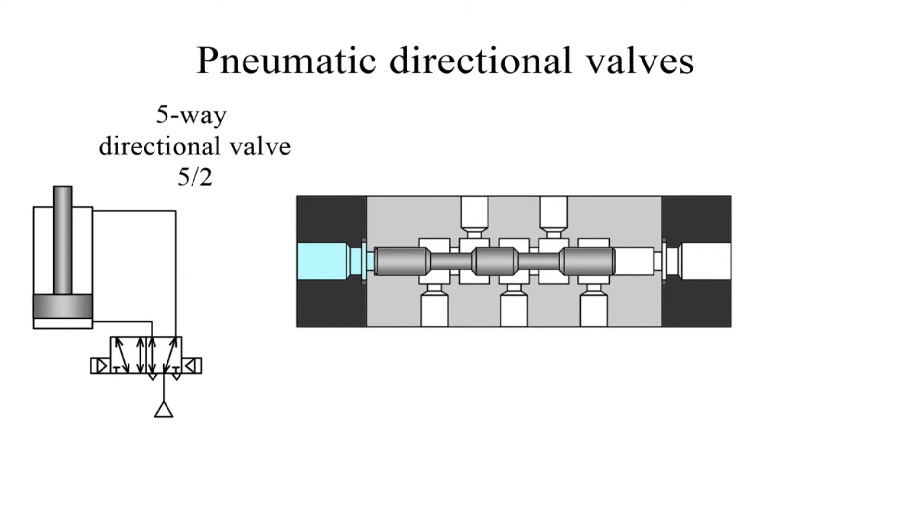How does a five-way valve work? Five-way valves are used to control double-acting cylinders. Each cylinder port has a separate exhaust port.